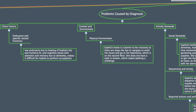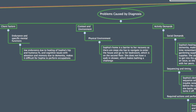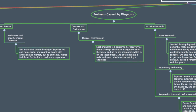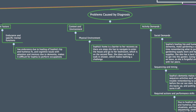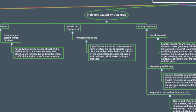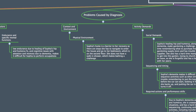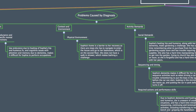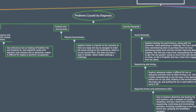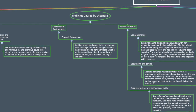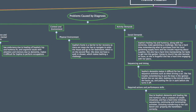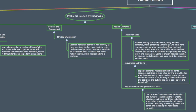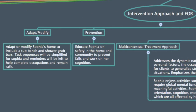Sophia's endurance has been affected by her total hip replacement and fracture, and her cognition has been affected by her dementia. Her home is a barrier to her recovery as there are steps she must navigate. Her diagnoses have caused problems with activity demands such as social demands, sequencing and timing, and required actions and performance skills. Gardening has become a challenge as she has difficulty remembering what to purchase and physically completing the activity. Driving has also become a concern, as she finds it difficult to correctly sequence the steps needed to drive, and her fractures and dementia have affected her ability to recognize unsafe situations.